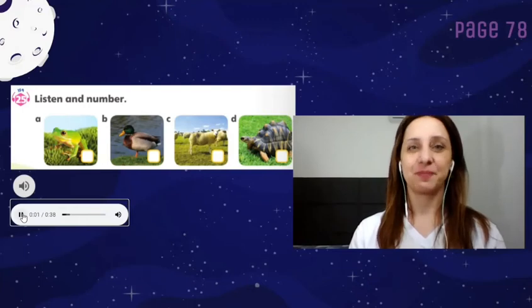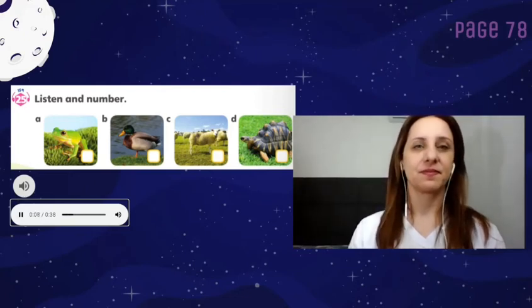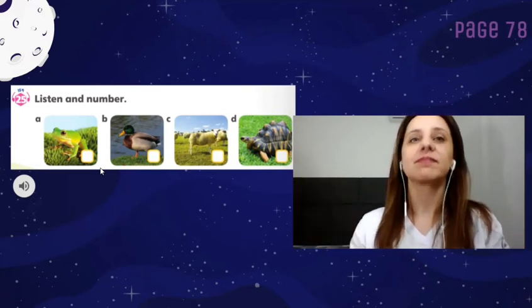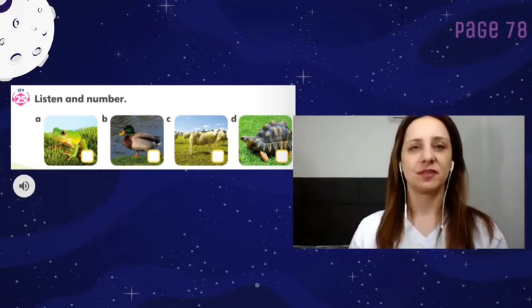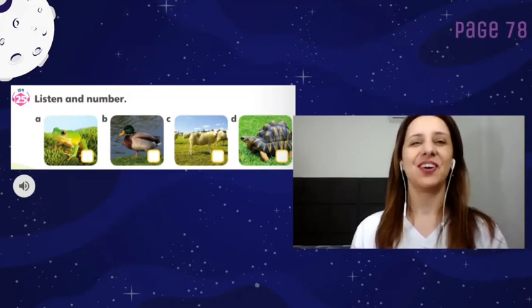Students book, page 78. Activity 25. Listen and number. Number 1. What are they? They're sheep. Number 2. What is it? It's a turtle. Number 3. What is it? It's a small frog. Number 4. What is it? It's a duck. Okay, guys. Very good.